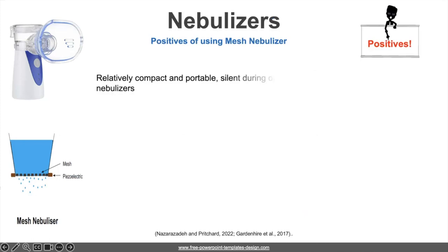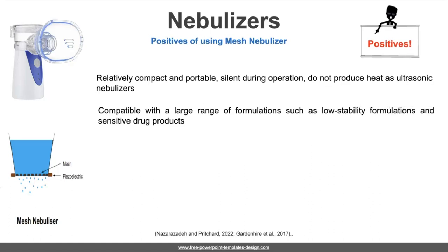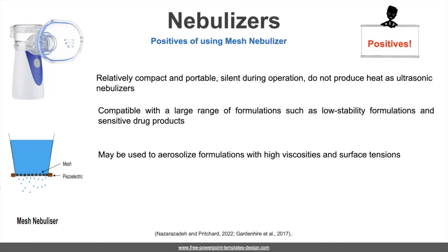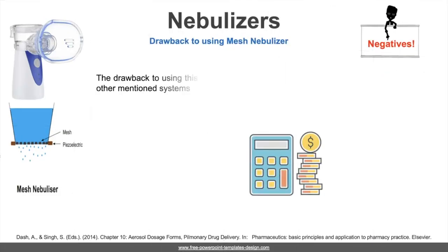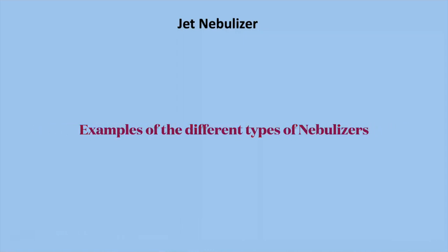The merits of mesh nebulizers include being relatively compact and portable, silent during operation, and not producing heat as ultrasonic nebulizers do. As such, they are compatible with a large range of formulations, including low-stability formulations and sensitive drug products. They are also able to aerosolize formulations with high viscosities and surface tensions, which is not possible with previously mentioned nebulizers. The drawback is cost, which is typically high in comparison to the other systems. Here are some examples of the nebulizers just discussed.